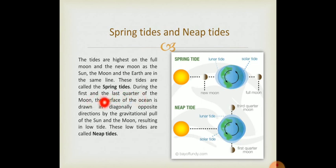During the first and last quarter of the moon, the surface of the ocean is drawn in diagonally opposite directions by the gravitational pull of the sun and the moon, resulting in low tides. See neap tide. What is the difference between spring tide and neap tide? The main difference is in spring tides the tides are highest, and in neap tides it results in low tides. Why? Because over here you can see that the sun and the moon are not in the same line. They are in diagonally opposite directions by the gravitational pull of the sun and the moon.